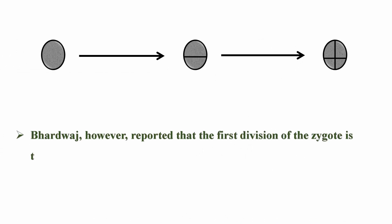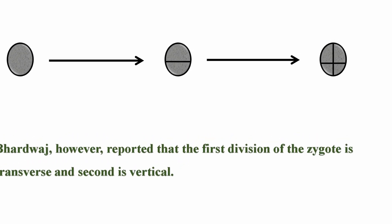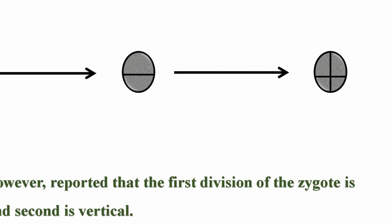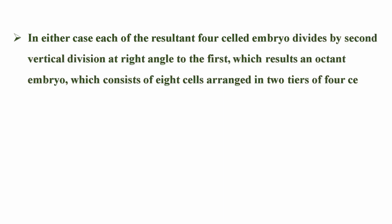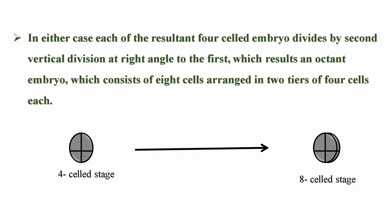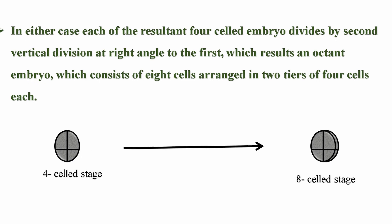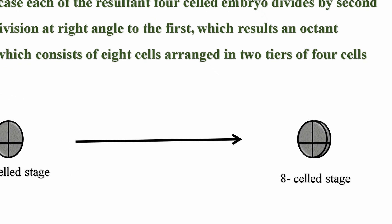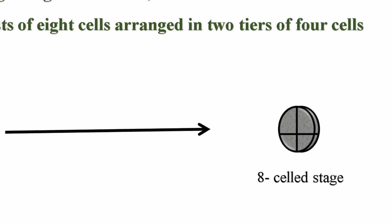Vardavats, however, reported that the first division of the zygote is transverse and second is vertical. In either case, each of the resultant four-celled embryo divides by second vertical divisions at right angle to the first which results an octant embryo which consists of eight cells arranged in two tiers or two layers of four cells each.